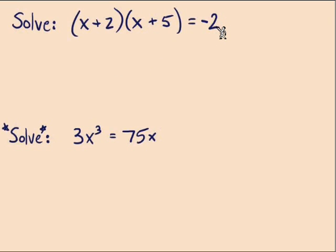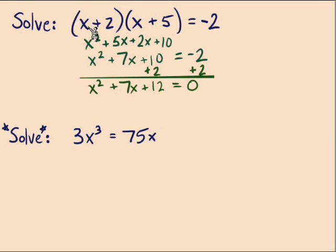See our terms so that we can take this negative two from the right side over to the left side. For this problem I start by doing FOIL: x squared plus 5x plus 2x plus 10. Combine like terms in the middle: x squared plus 7x plus 10 equals negative 2.